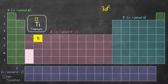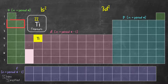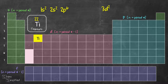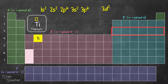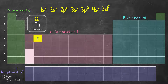Now let's complete the full electron configuration for titanium, starting from the top. Period 1: 1s2. Period 2: 2s2, then the P block with 6 members — 2p6. Period 3: 3s2, then 3p6. Entering period 4: 4s2. Then we enter the D block, which we've already addressed for titanium as 3d2. That completes the full electron configuration for titanium: 1s2 2s2 2p6 3s2 3p6 4s2 3d2.